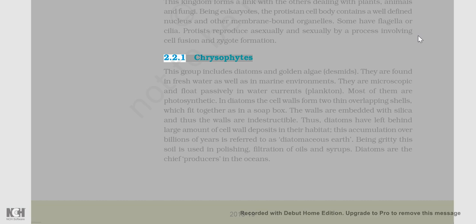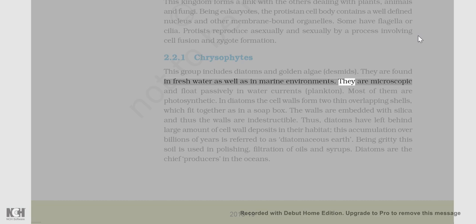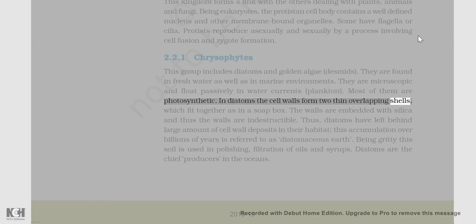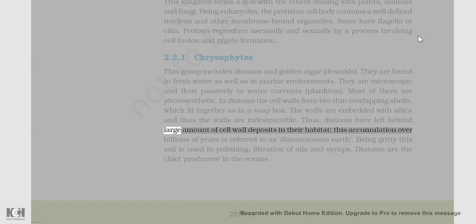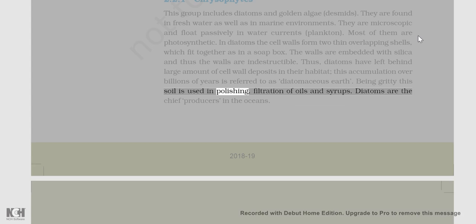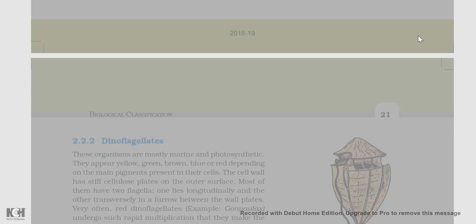2.2.1 Chrysophytes: This group includes diatoms and golden algae (desmids). They are found in fresh water as well as in marine environments. They are microscopic and float passively in water currents (plankton). Most of them are photosynthetic. In diatoms, the cell walls form two thin overlapping shells which fit together as in a soapbox. The walls are embedded with silica and thus are indestructible. Diatoms have left behind large amounts of cell wall deposits — this accumulation over billions of years is referred to as diatomaceous earth. Being gritty, the soil is used in polishing and filtration of oils and syrups. Diatoms are the chief producers in the ocean.